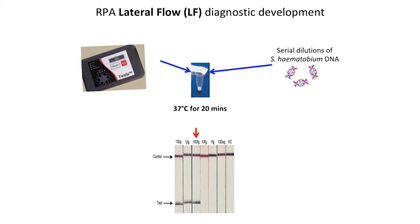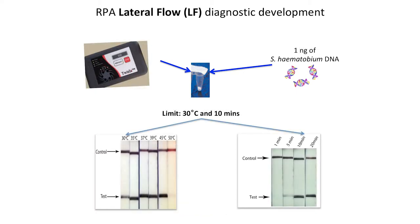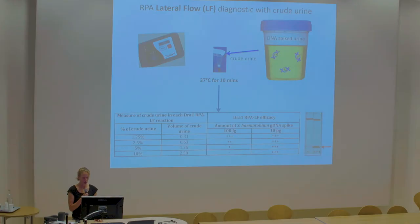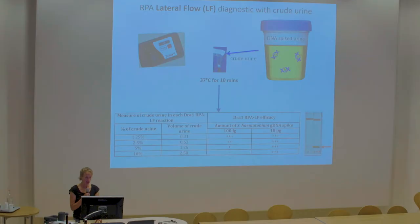The reaction works at as low as 30 degrees and you can get a result within five to ten minutes. We put inhibitors into our assays, adding crude urine to see how the reaction was affected, and it performed very well with small amounts of crude urine added, showing how robust the assay is with crude samples and those inhibitors.